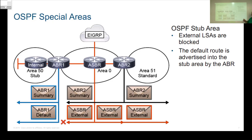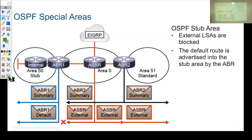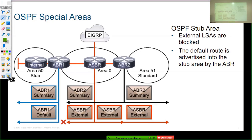The first type of special area is known as a stub area. Stub areas are typically used when there's only one way in or out of that area. In this case, right over here in area number 50, we have ABR1, and the idea is that if we want to get to any other area or to external routes, it's got to go through ABR number one.